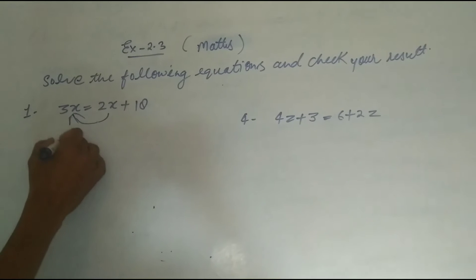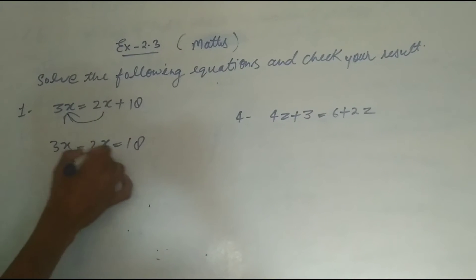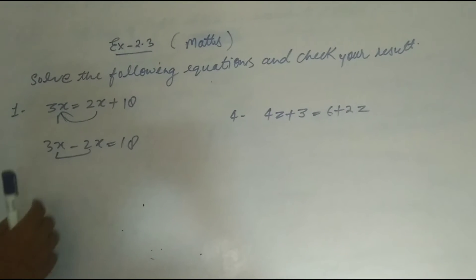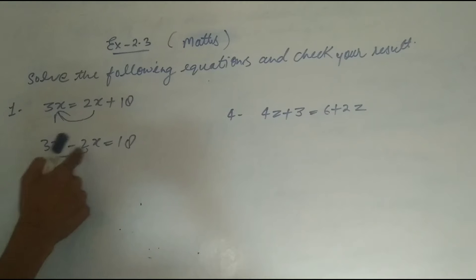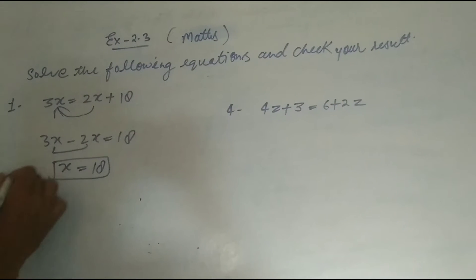We take 2x to the opposite side, we get 3x - 2x = 18. 3x and 2x are both like terms, so we will subtract here. 3x - 2x is x = 18. The value of x is 18.